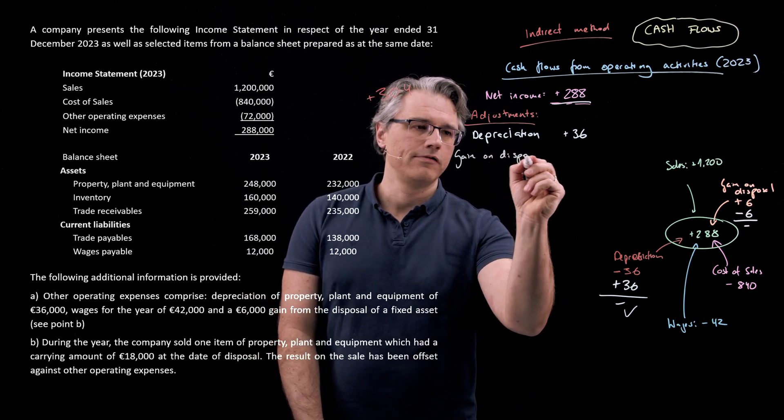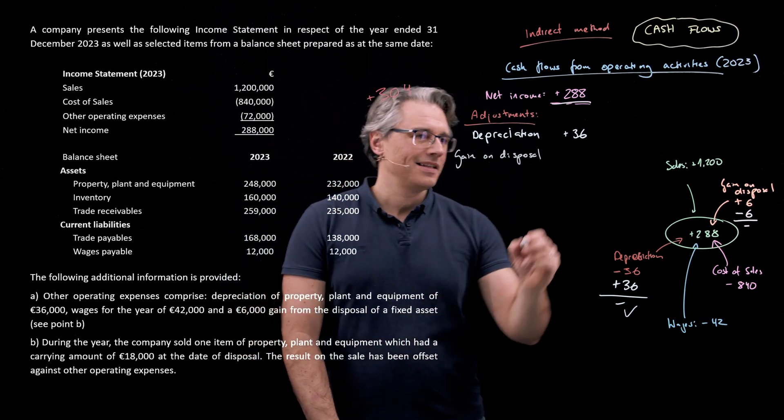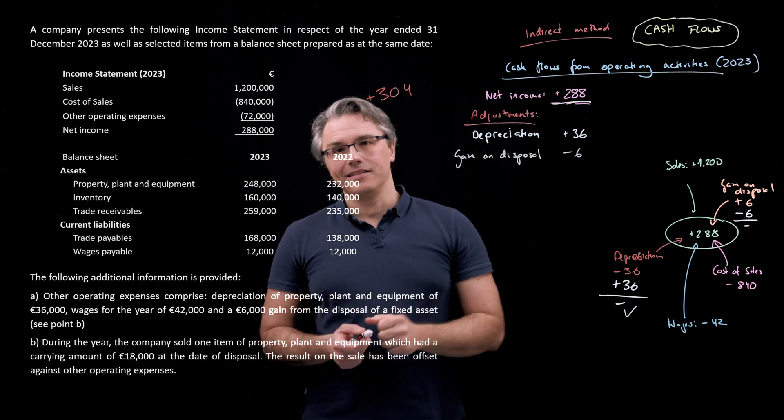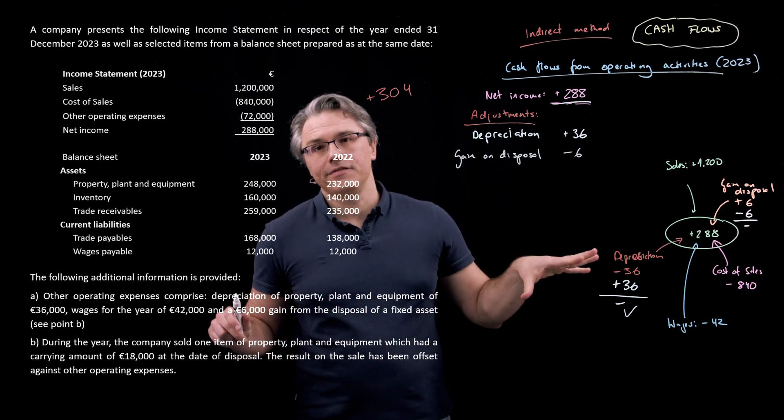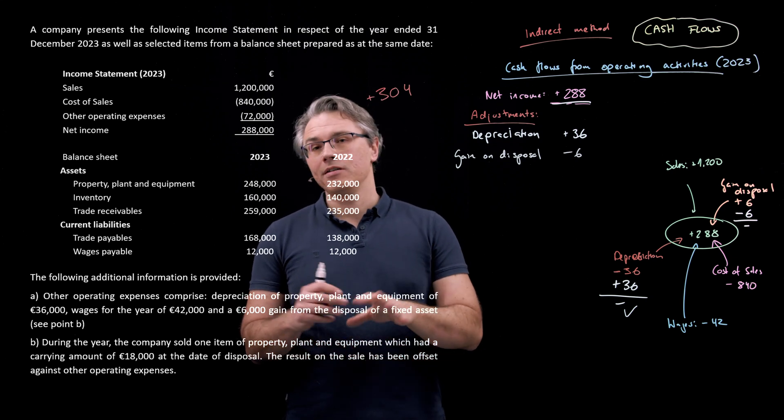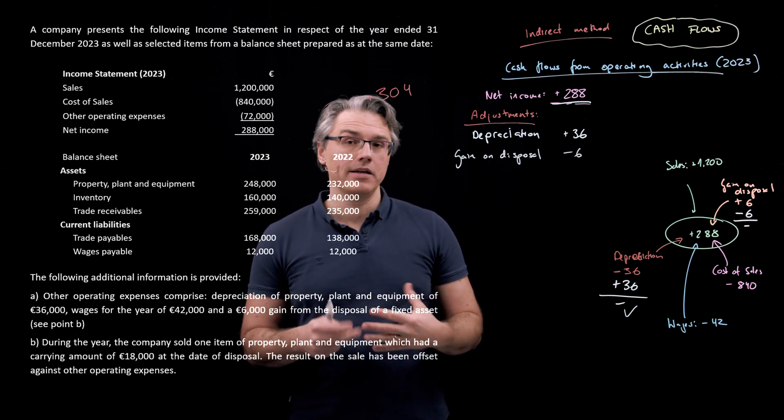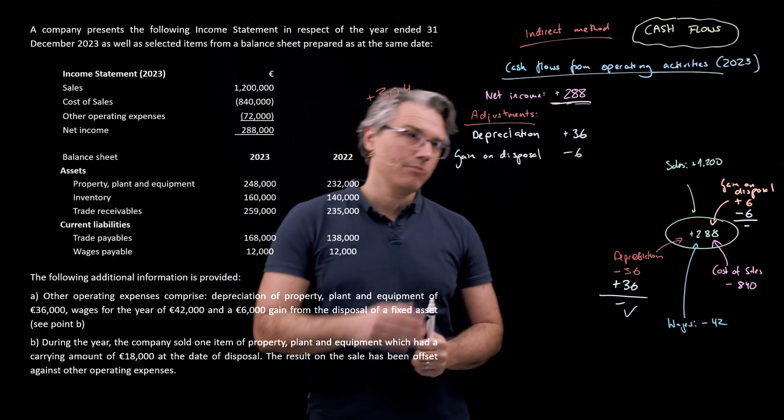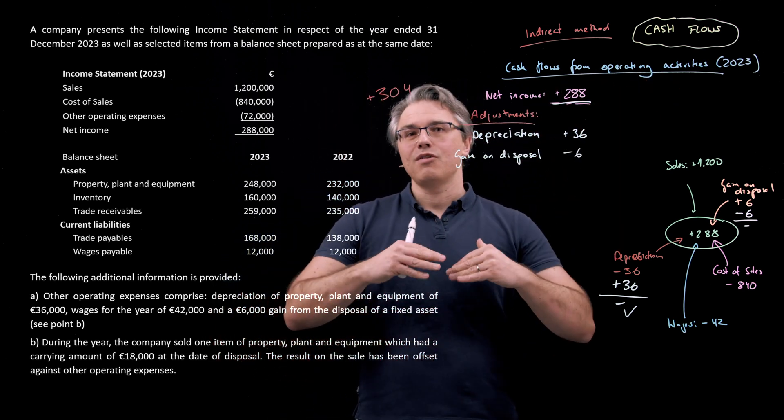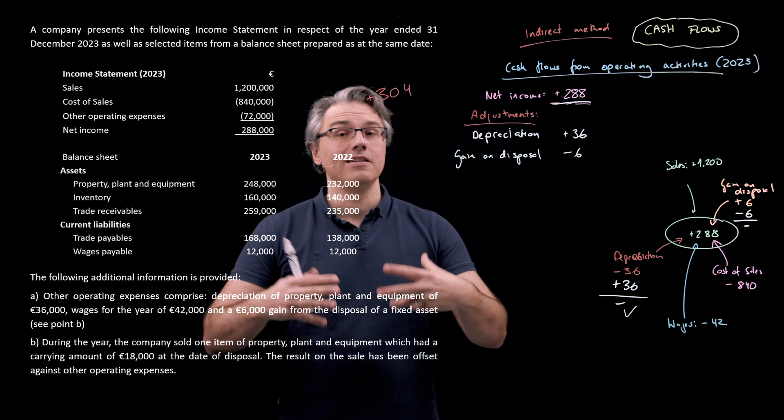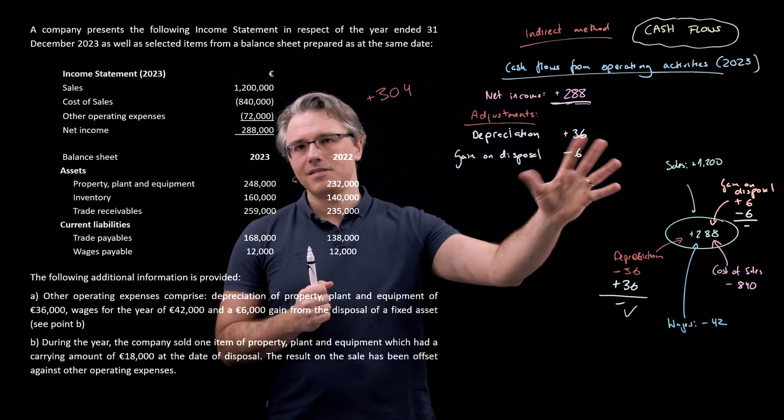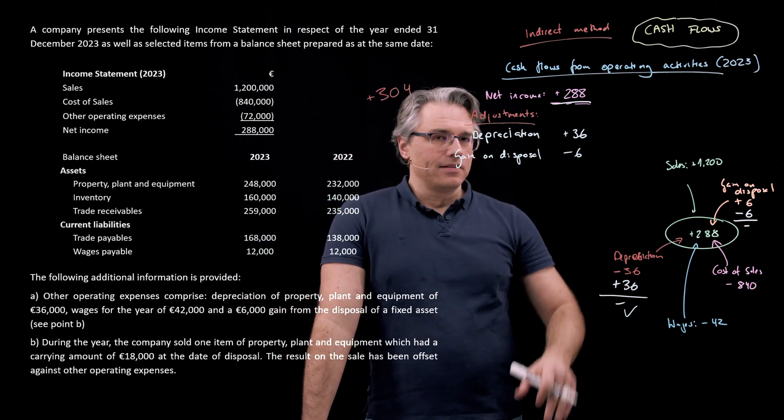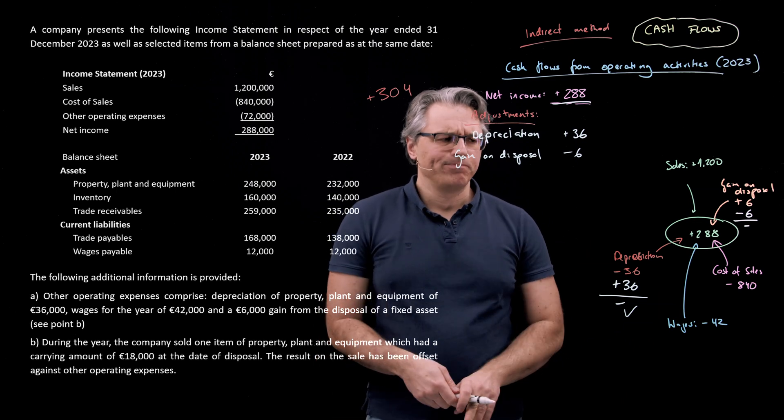Because our starting point is net income, I want to include an adjustment for the gain on disposal, and it's a downward adjustment because I want to clear the net income from this effect. When I come to the investing section, I would include as something positive the entire proceeds received from the sale. This is a clearing operation.